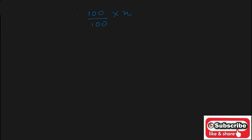Now solve this. x plus 400 percent of x is 400 upon 100 of x, that is x plus 4x. Divided by y plus 500 percent of y means 500 upon 100 into y. Zeros and zeros get cancelled, giving x plus 4x upon y plus 5y, which is 5x upon 6y.